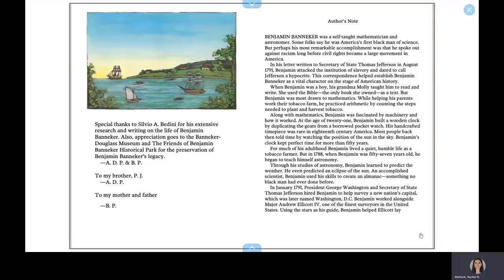For much of his adulthood, Benjamin lived a quiet, humble life as a tobacco farmer. But in 1788, when Benjamin was 57 years old, he began to teach himself astronomy. Through his studies of astronomy, Benjamin learned to predict the weather. He even predicted an eclipse of the sun. An accomplished scientist, Benjamin used his skills to create an almanac, something no black man had ever done before.